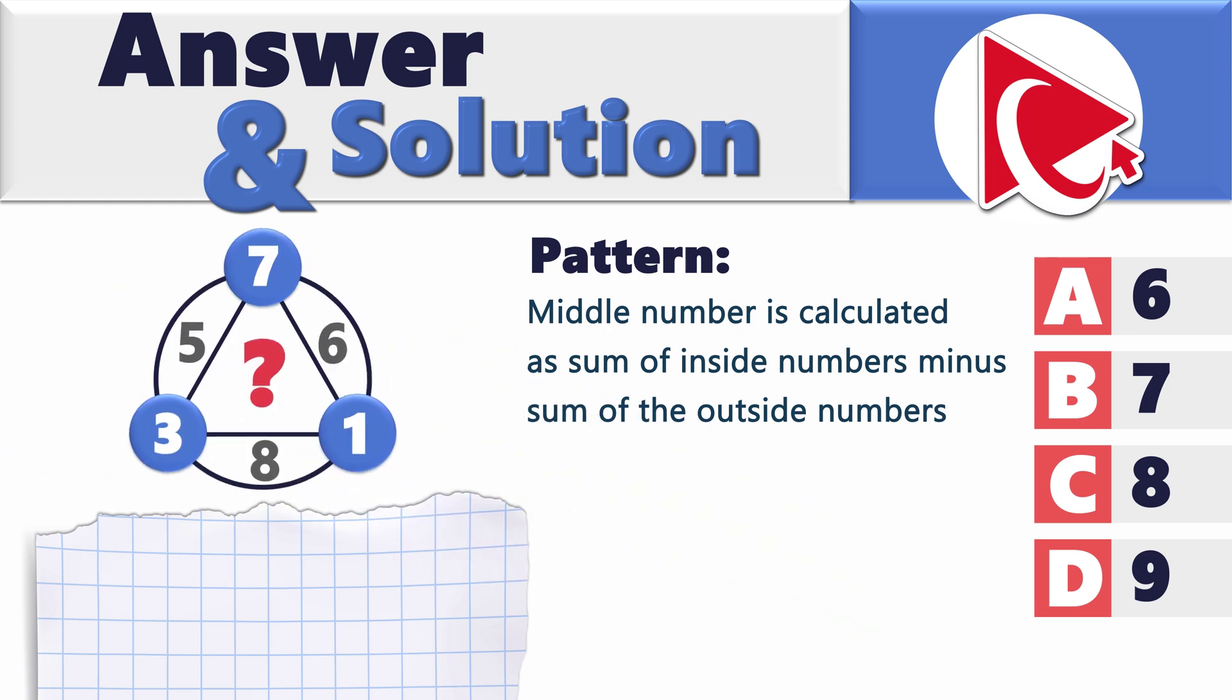Let's calculate then the missing digit. 5 plus 6 plus 8 minus 3 plus 7 plus 1 equals 8. So the correct answer here is choice C, 8.